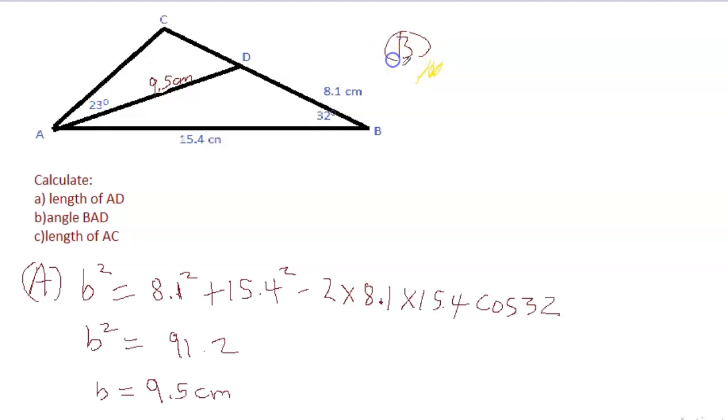Part b, we're asked to find angle BAD. So we're focusing on the same triangle here, angle BAD. Of course sine rule could work. We could say sine of angle A over 8.1 equals sine 32 over 9.5.